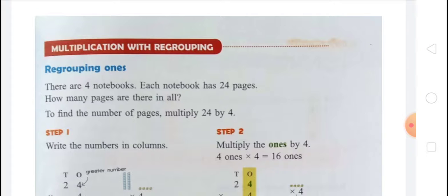After that we learned understanding multiplication. In this topic we learned multiplying by two doubles, multiplying by five, multiplying by ten, multiplying by zero, and multiplying by one.